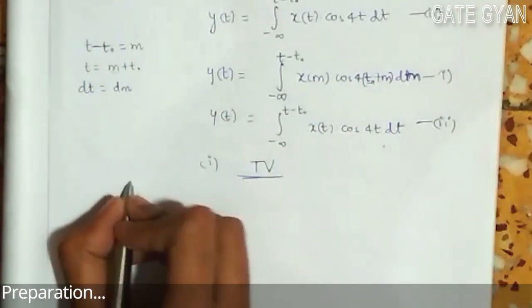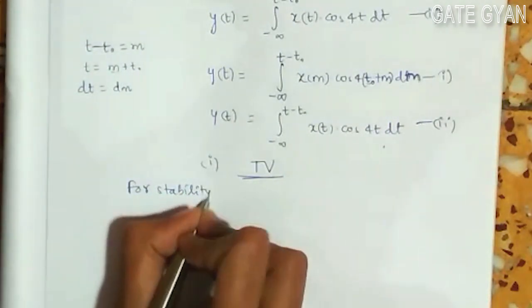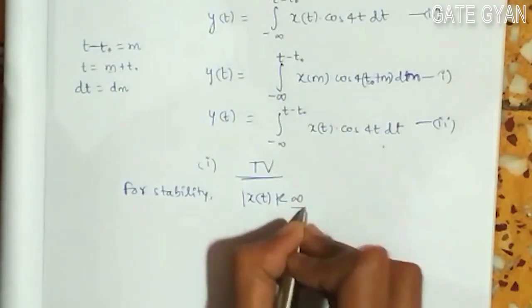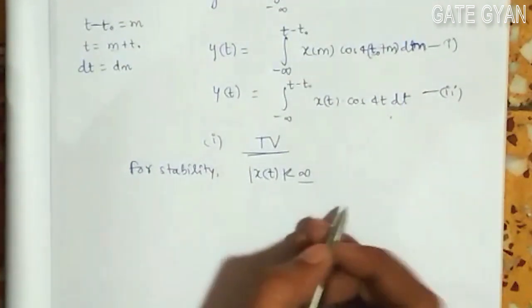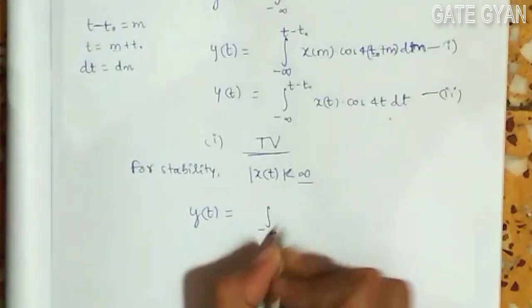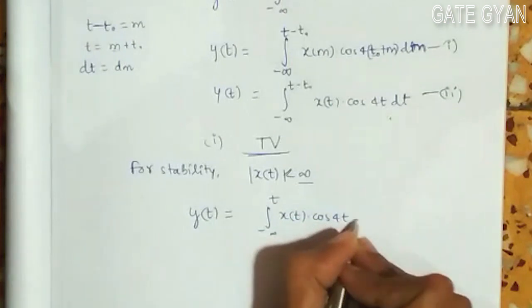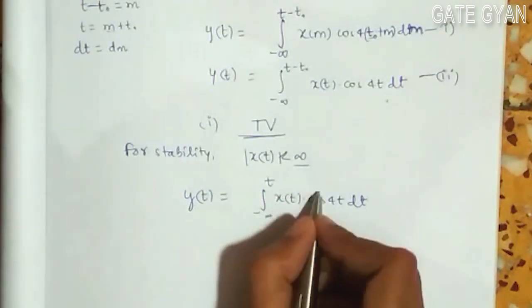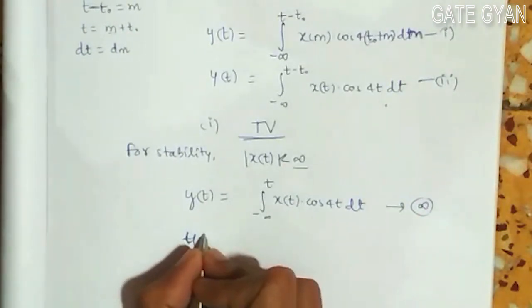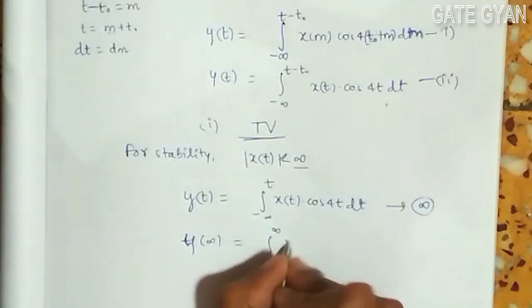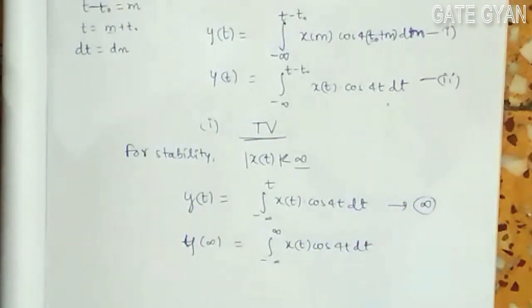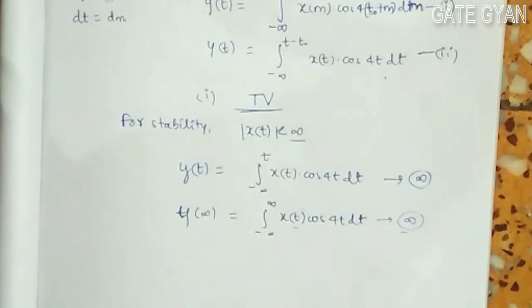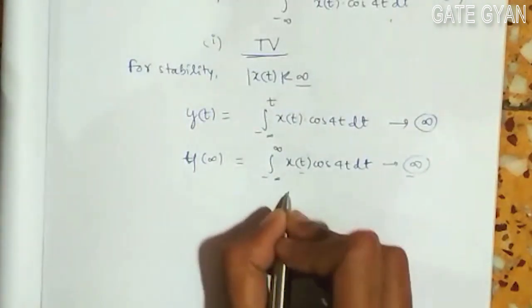Second, we check for stability. For stability, if the input x(t) is bounded, meaning |x(t)| is less than infinity, we check whether y(t) is also bounded. The expression for y(t) is the integral from minus infinity to t of x(t) times cos(4t) dt. Since the upper limit is t and as t tends to infinity this expression tends to infinity, when t goes to infinity we get the integral from minus infinity to infinity of x(t) cos(4t) dt. Even for a bounded x(t), this integral becomes unbounded. So this is a non-stable system.